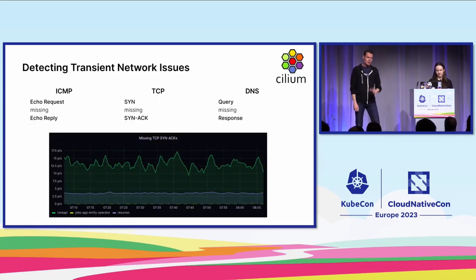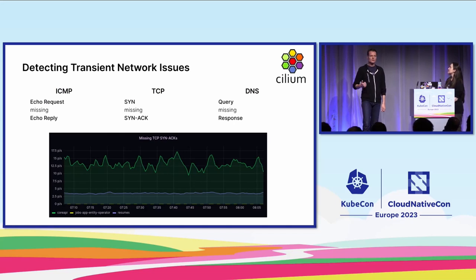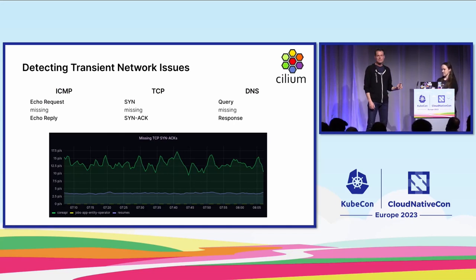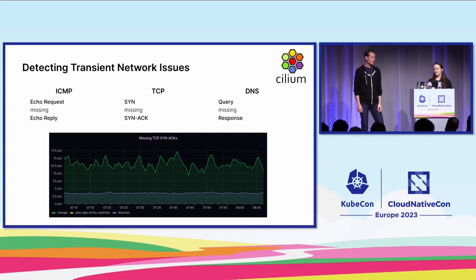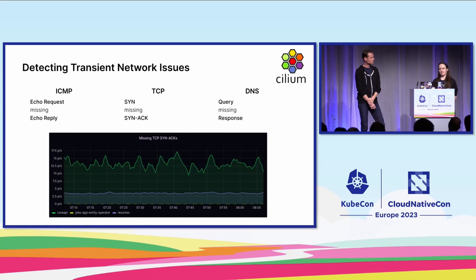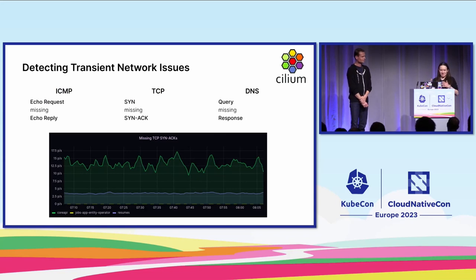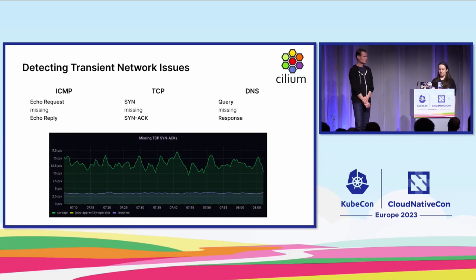Besides that, we also support pure layer 3 metrics. We can see TCP retransmissions, missing SYNs, DNS responses and error codes, and also ICMP echo requests and replies. We have the same pattern for different network layers, from layer 3 to layer 7, different protocols — ICMP, TCP, DNS. For TCP, we look for requests with SYN flag and missing responses with SYN-ACK flag. For DNS, we also look for queries without responses, and so on and so forth.